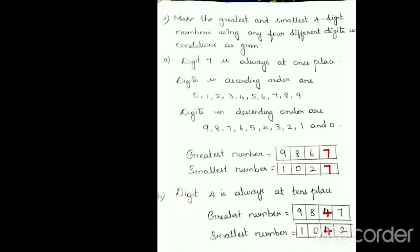For this sum, first we will arrange the digits in ascending and descending order. Digits in ascending order are: 0, 1, 2, 3, 4, 5, 6, 7, 8 and 9. Digits in descending order are: 9, 8, 7, 6, 5, 4, 3, 2, 1 and 0. We arrange them this way because we have to make the greatest and smallest numbers — it makes it easier. The condition is that digit 7 is always at the 1's place, so in both the greatest and smallest numbers, 7 is fixed at the 1's place.